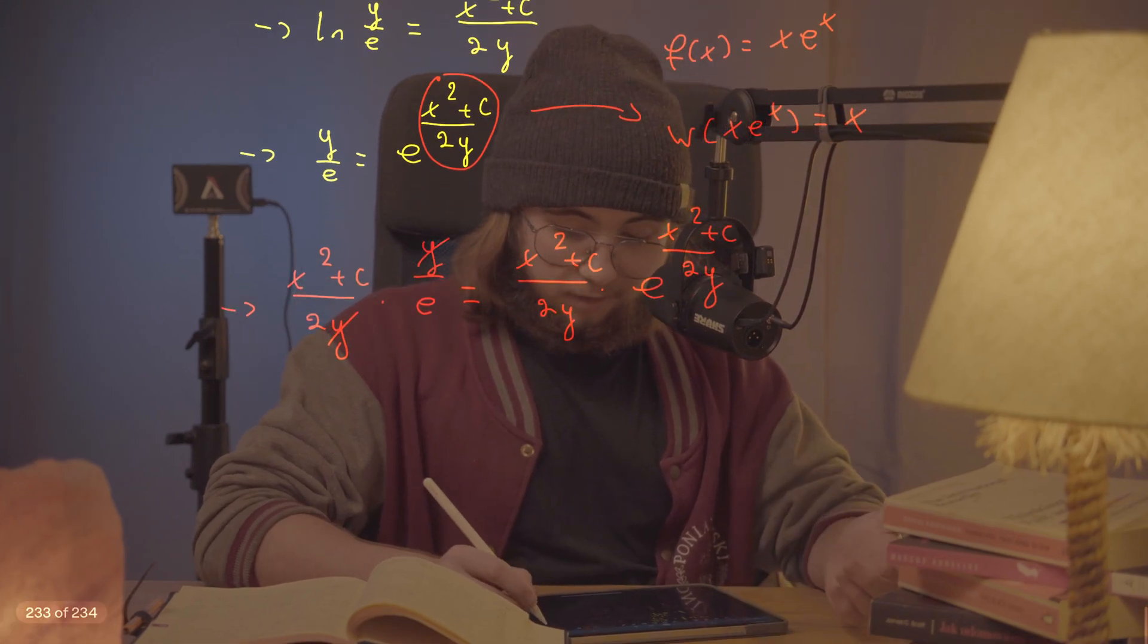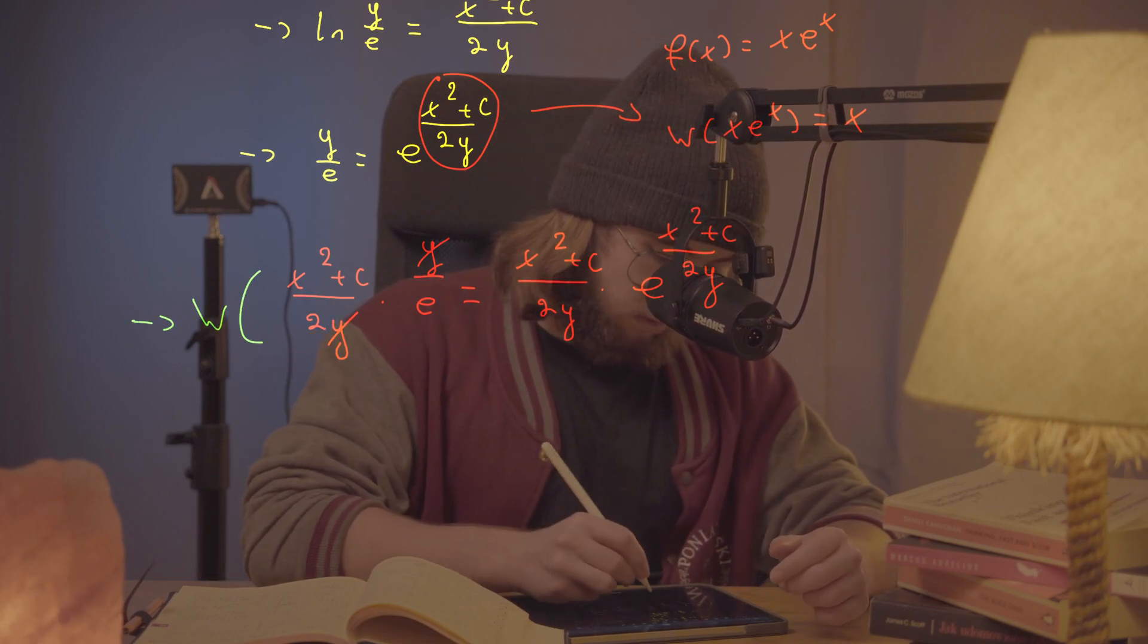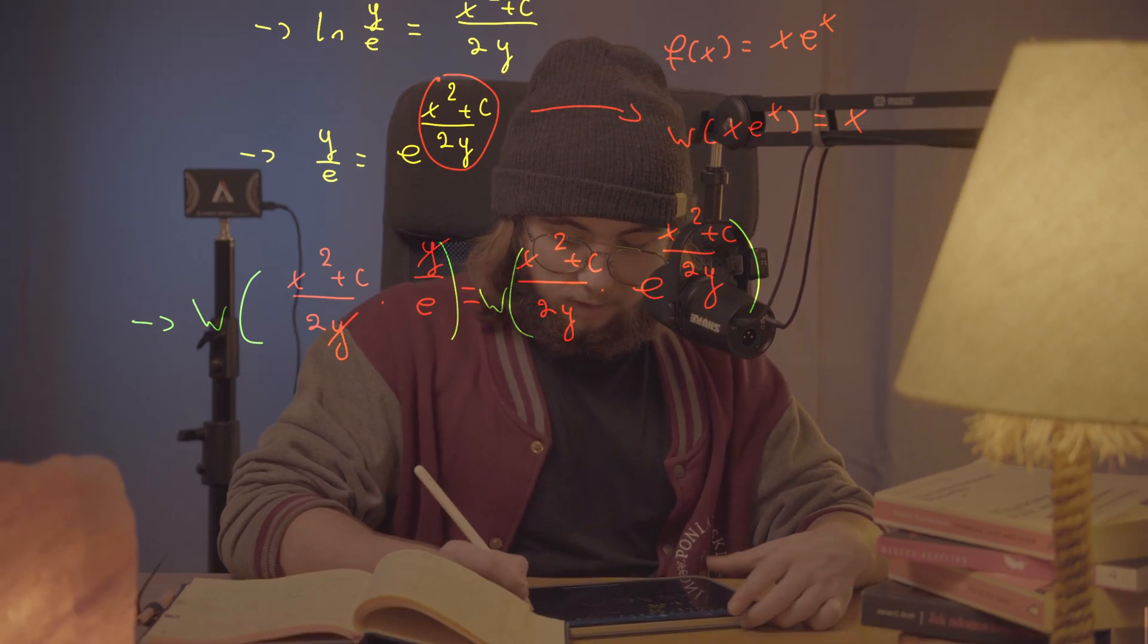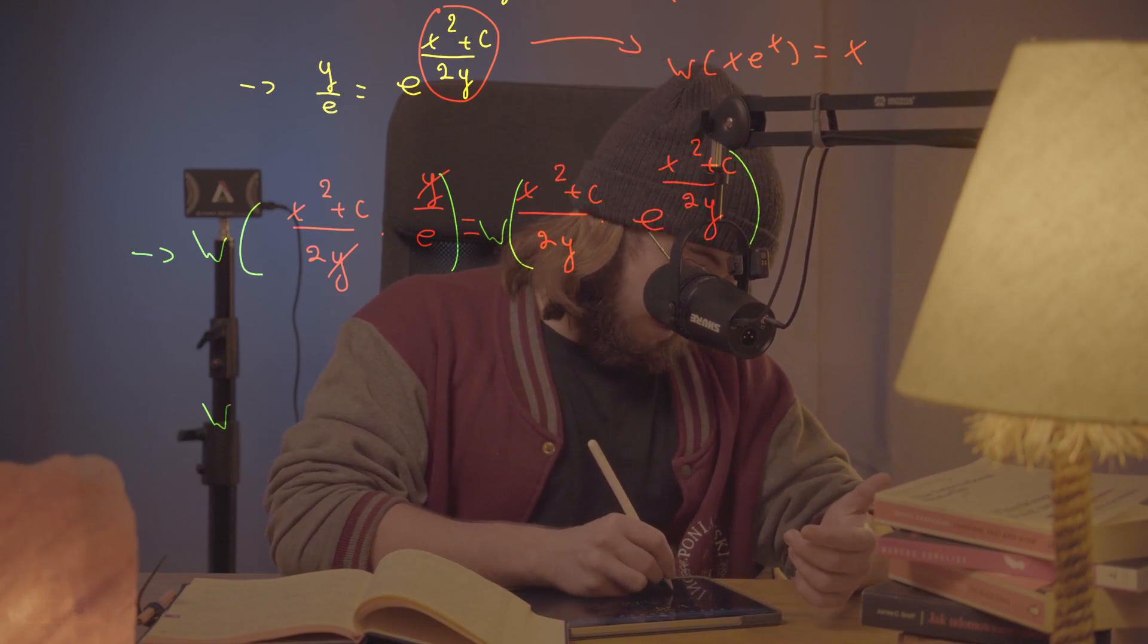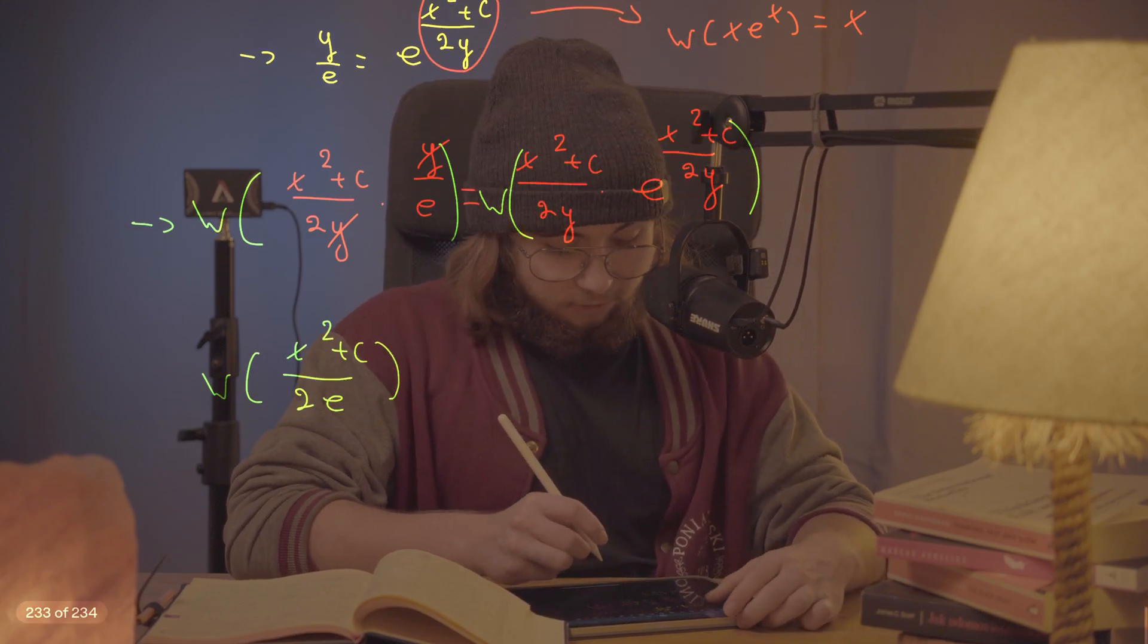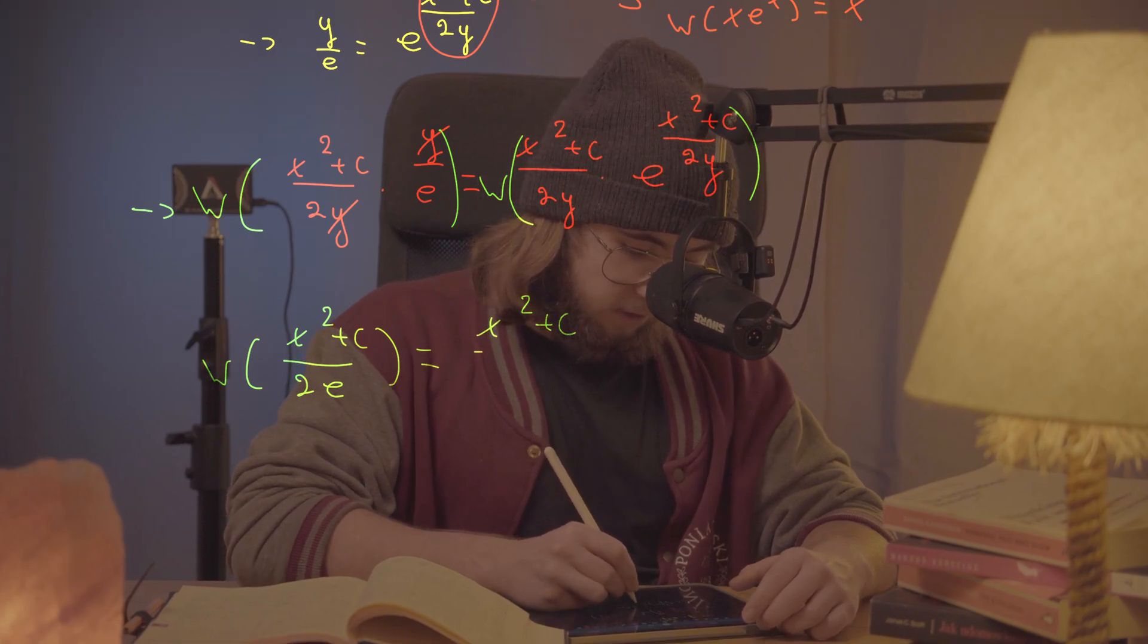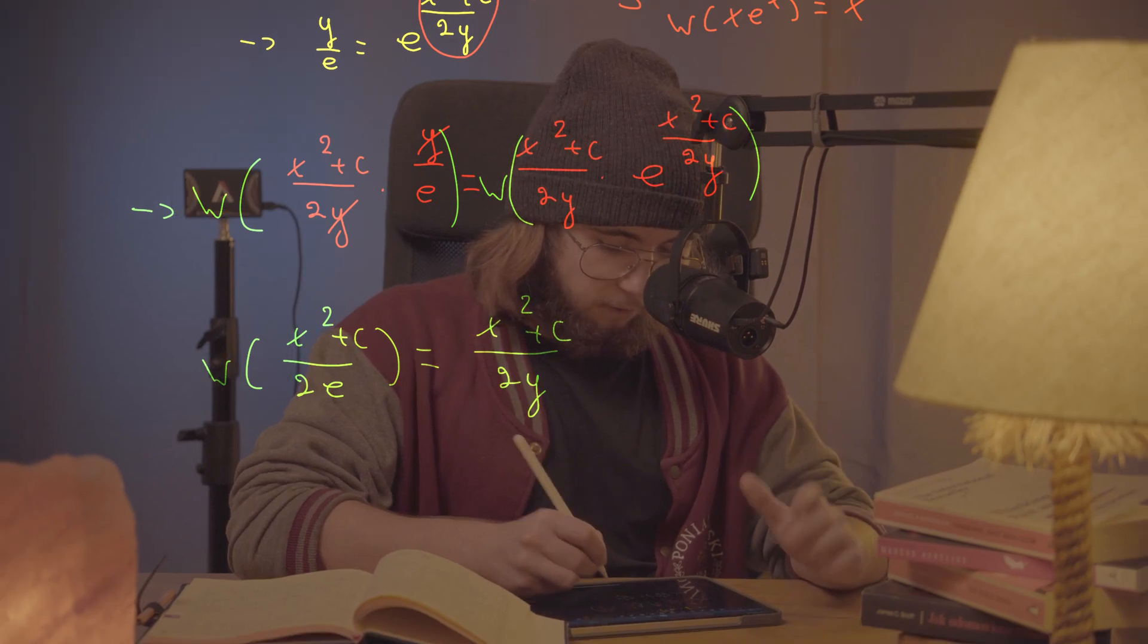And now, just take the Lambert of both sides. I'm going to maybe write it as such. So Lambert of this thing and then Lambert of this thing is going to give me what? It's going to give me here just the Lambert W function of (x squared plus c)/(2e). I can't really do anything about it, honestly. But on the right-hand side, I'm going to get (x squared plus c)/(2y), which is absolutely perfect.